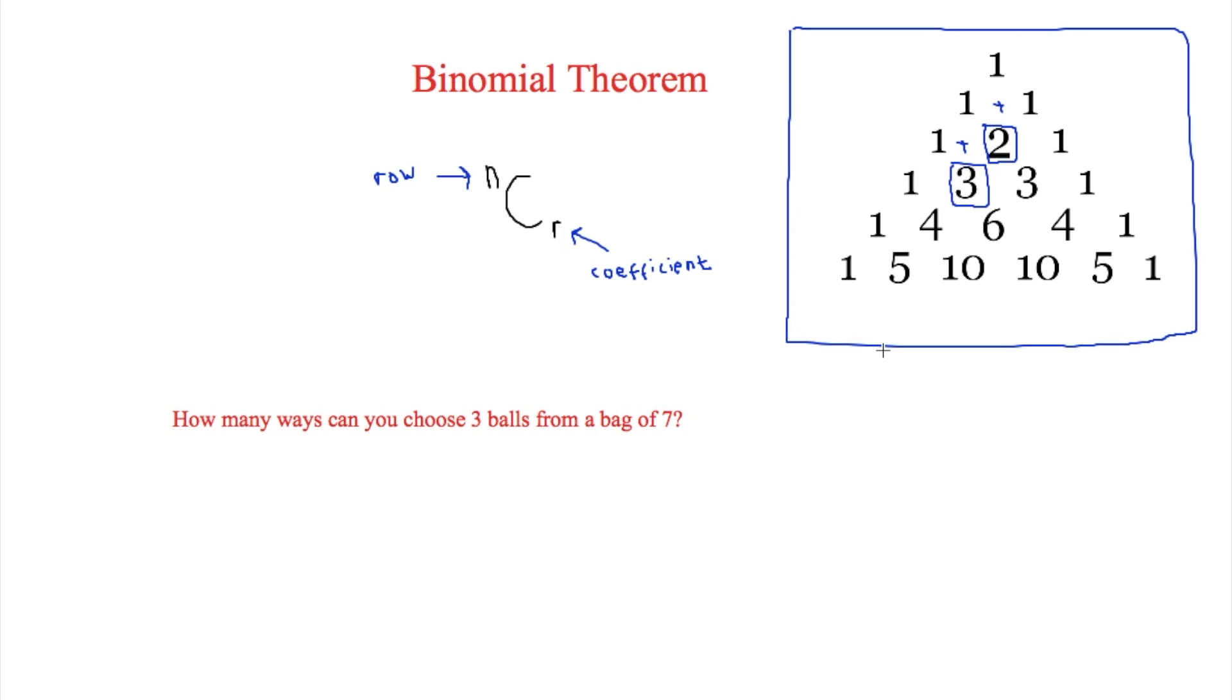However there is a much easier way of working it out than having to write it out over time and this is done by the nCr. In order to get the thing all you need to do is press shift divide and that will come up with a C on your calculator.